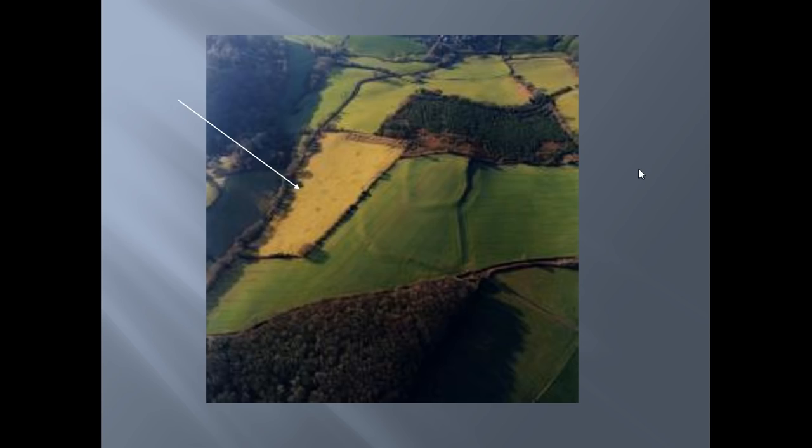These are all examples of enclosed fields, and anytime you fly over a place like England today you'll see it. It did not used to look like this with all these little hedgerows and fences around the fields — it used to be a lot more open.